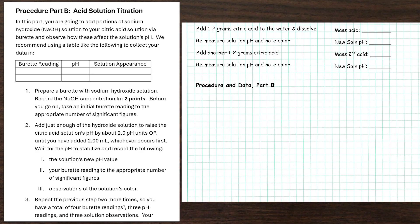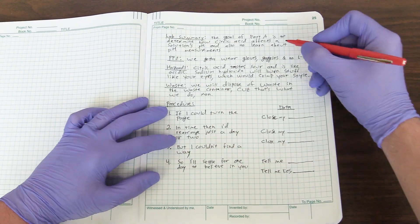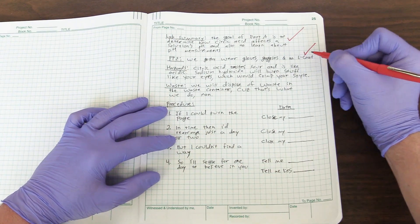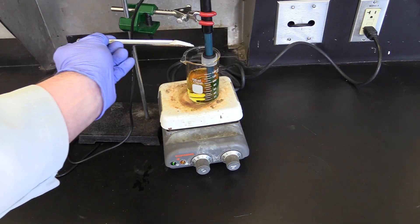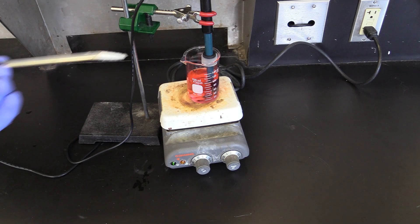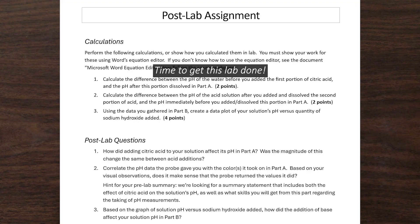Now that you know what a handwritten procedure should look like, to complete your pre-lab training exercise, you have to write out a procedure and data template of your own for this experiment's part B. And that's how you get your pre-lab ready. When you arrive for lab, your TA will check it, and then you'll perform your experiment, and after that it will be time to complete your post-lab assignment.